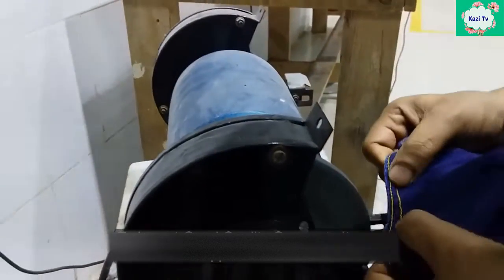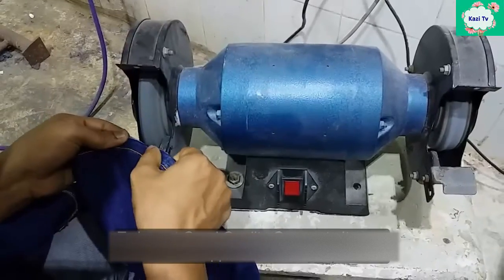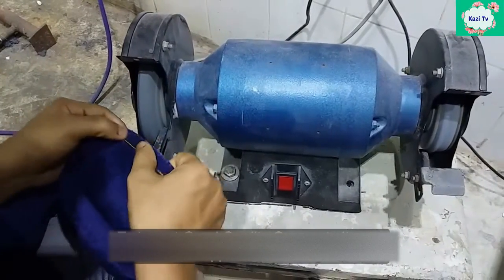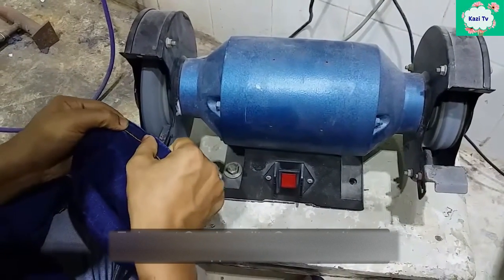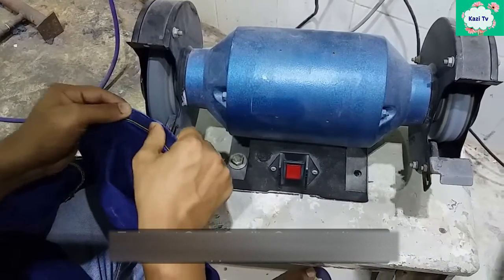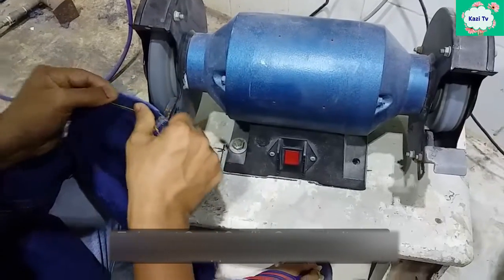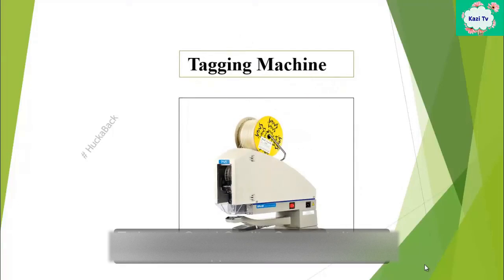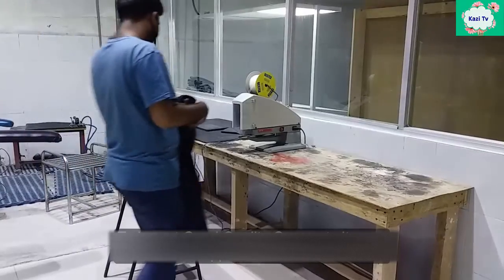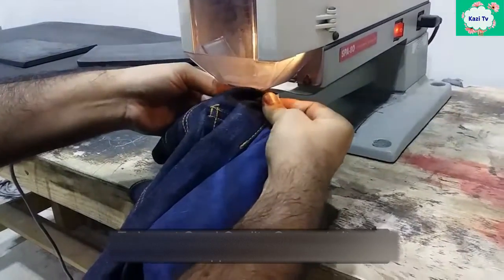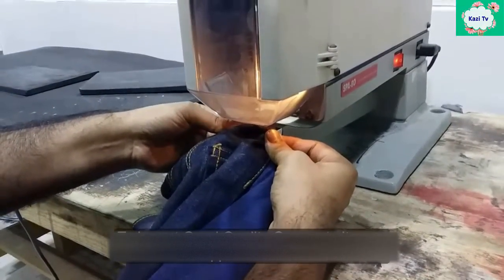These wheels move at high speed by an electric motor. The garment comes in contact with the wheel and becomes slightly damaged. Tagging machine: this machine is used to tag the garments. This machine has a needle and plastic pin.